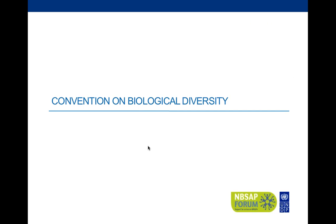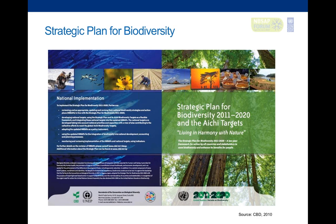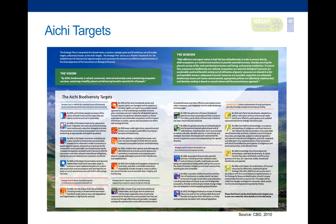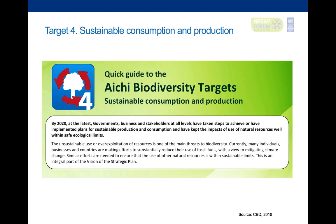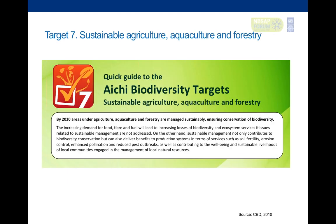The Convention on Biological Diversity, through the Strategic Plan for Biodiversity and the Aichi Biodiversity Targets, has the mission of taking effective and urgent action to halt biodiversity loss to ensure ecosystems are resilient and continue to provide essential services. Sustainable commodity supply chains play an important role in helping achieve several Aichi targets — particularly target four, referring to sustainable consumption and production, and target seven, referring to sustainable agriculture, aquaculture, and forestry.